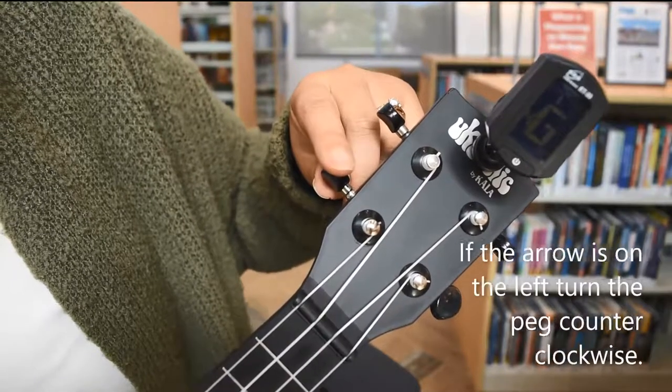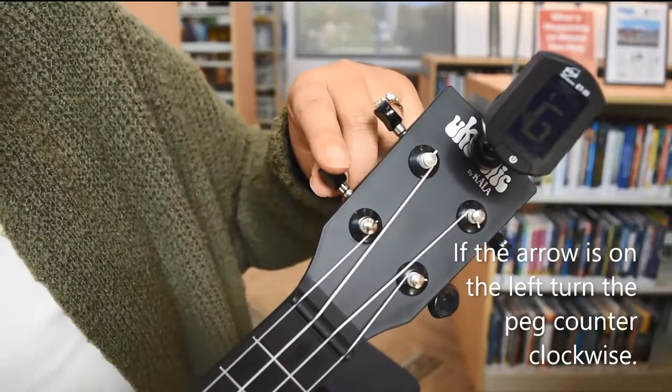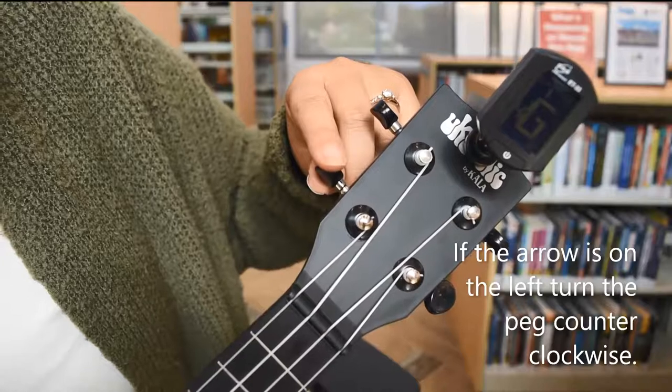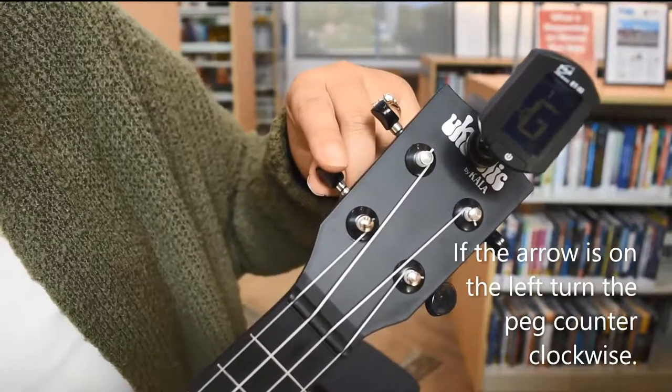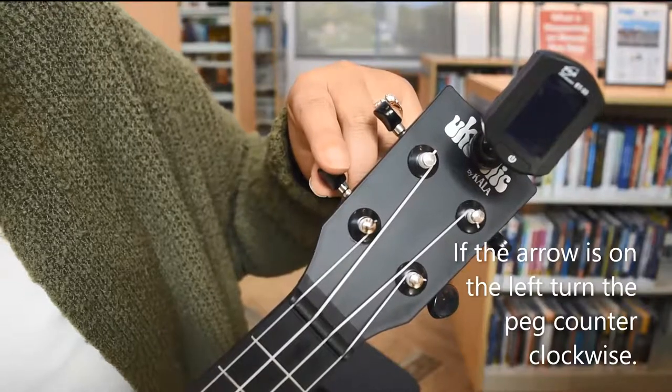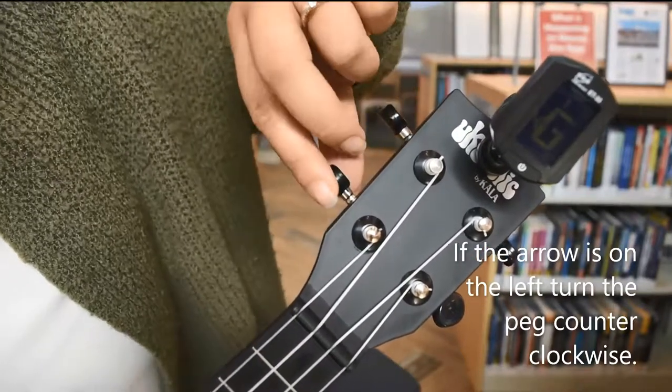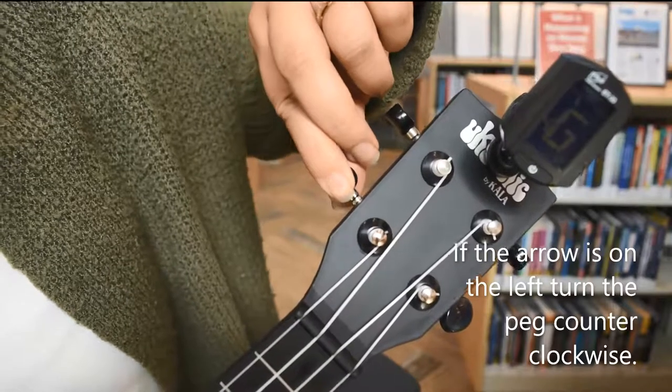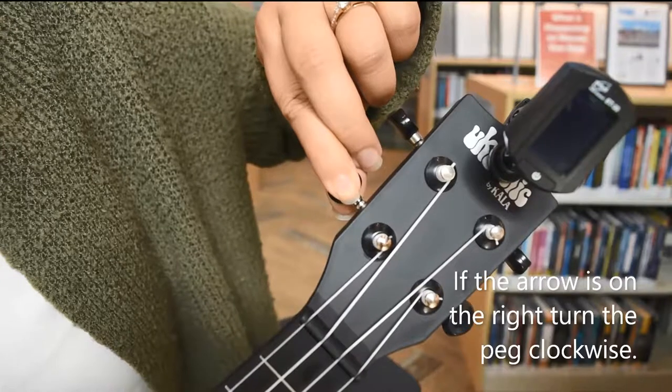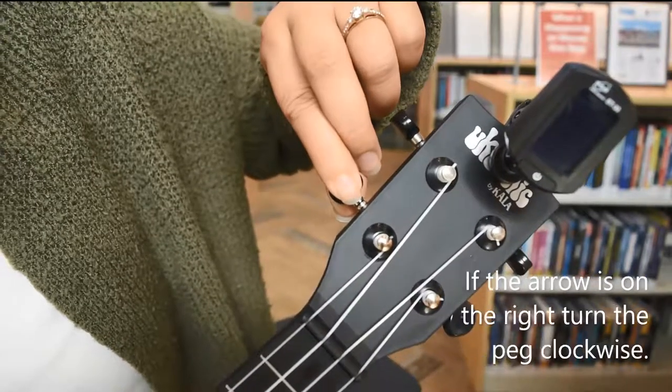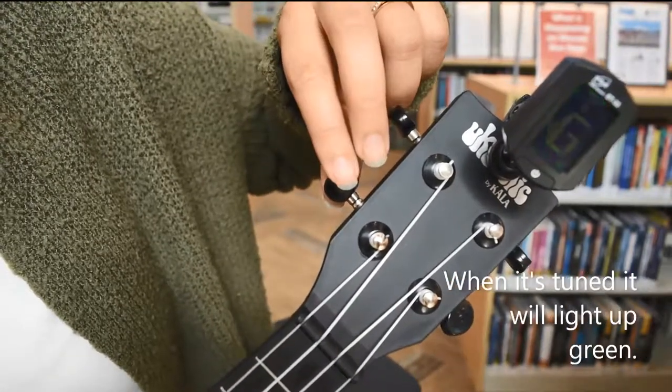See the arrow above the G. If the arrow is on the left-hand side, where it's minus 50, that means that the string is flat, the chord is too low, so you're going to need to turn the peg counter-clockwise away from the ukulele until it lights up green.